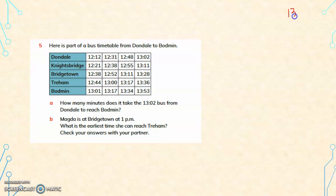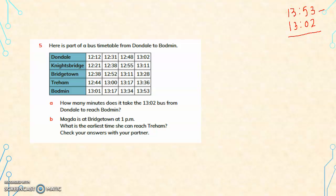It reaches Bodmin at 13:53. So it started at 13:02. What is the time interval? 13:53 minus 13:02. 3 minus 2 is 1.